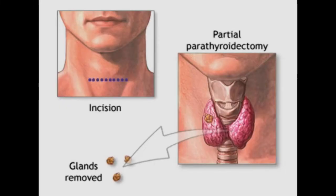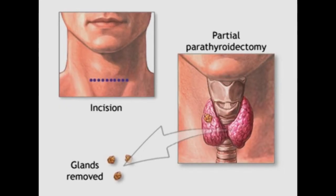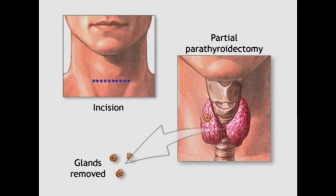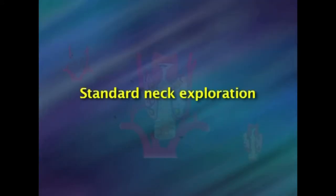Minimally invasive parathyroidectomy can be done on an outpatient basis and may be used when only one parathyroid gland is likely to be overactive. Guided by a tumor imaging test, the surgeon makes a small incision in the neck to remove the gland. A small incision means that patients typically have less pain and a quicker recovery than with more invasive surgery. Local or general anesthesia may be used for this type of surgery.